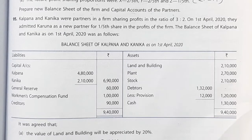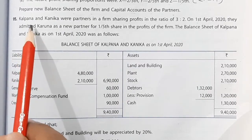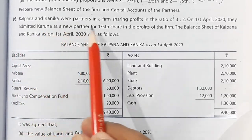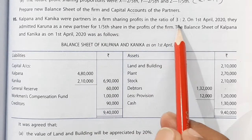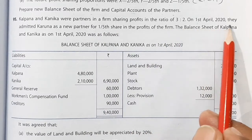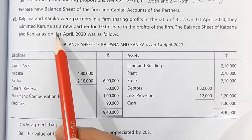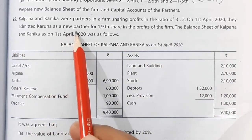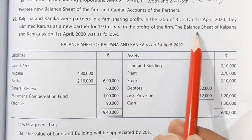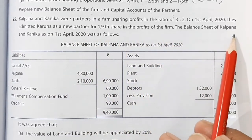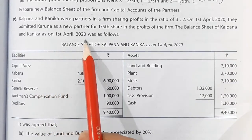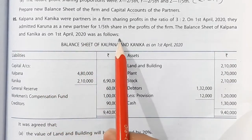Let us see question number 95. Kalpana and Kanika were partners in a firm sharing profits in the ratio 3 to 2. On 1st April 2020 they admitted Karuna as a new partner for one-fifth share in the profits of the firm. The balance sheet of Kalpana and Kanika as on 1st April 2020 was as follows.